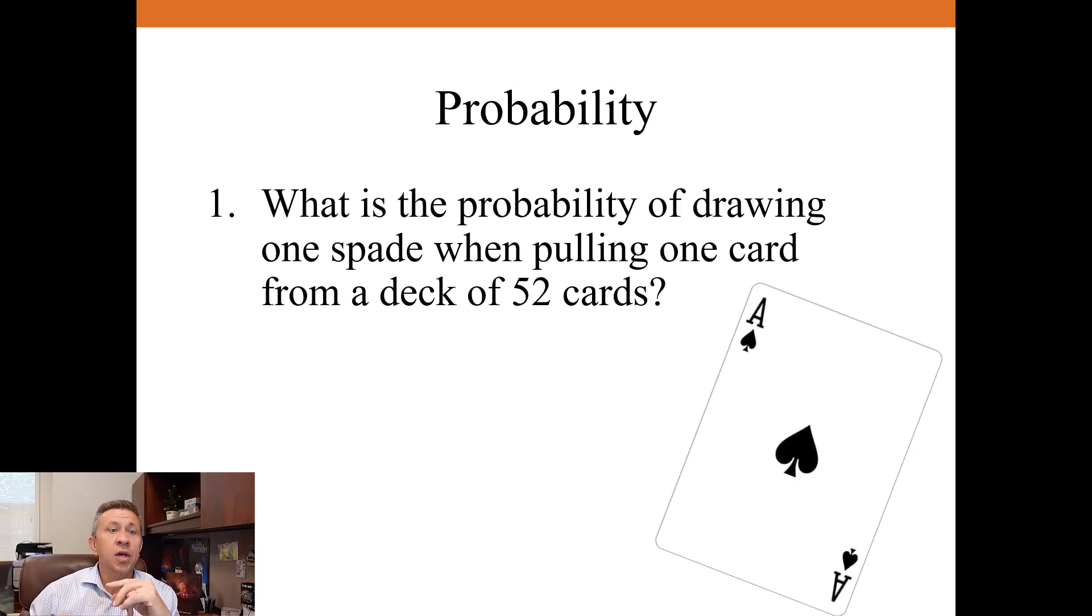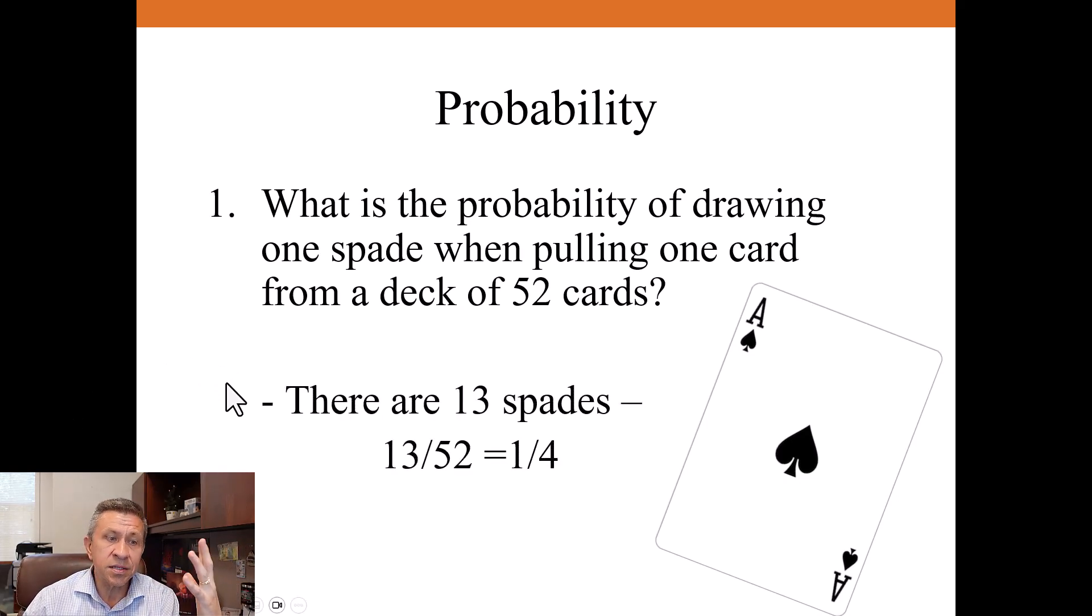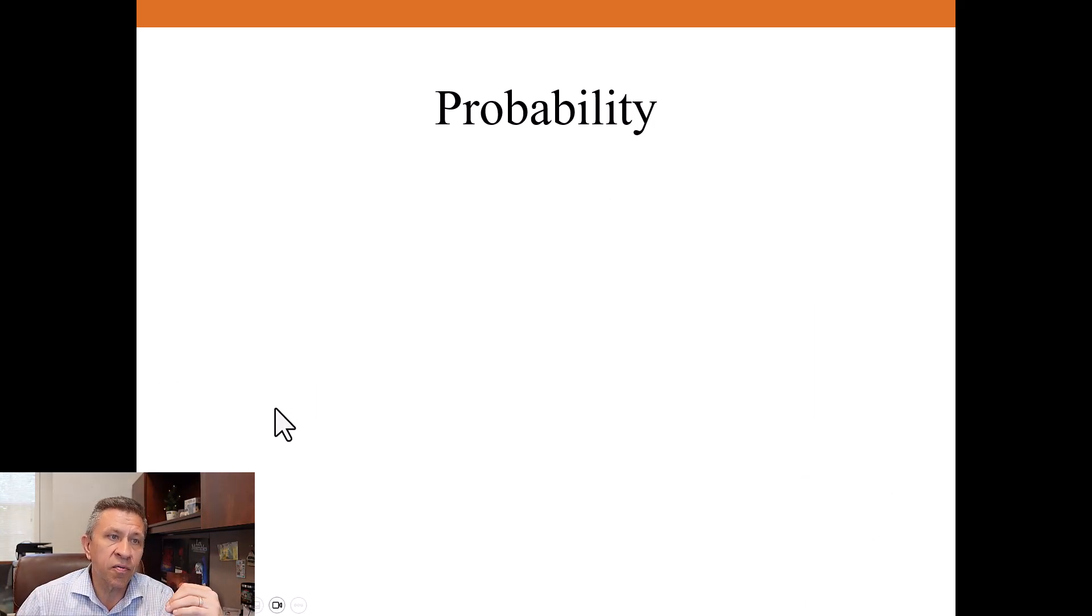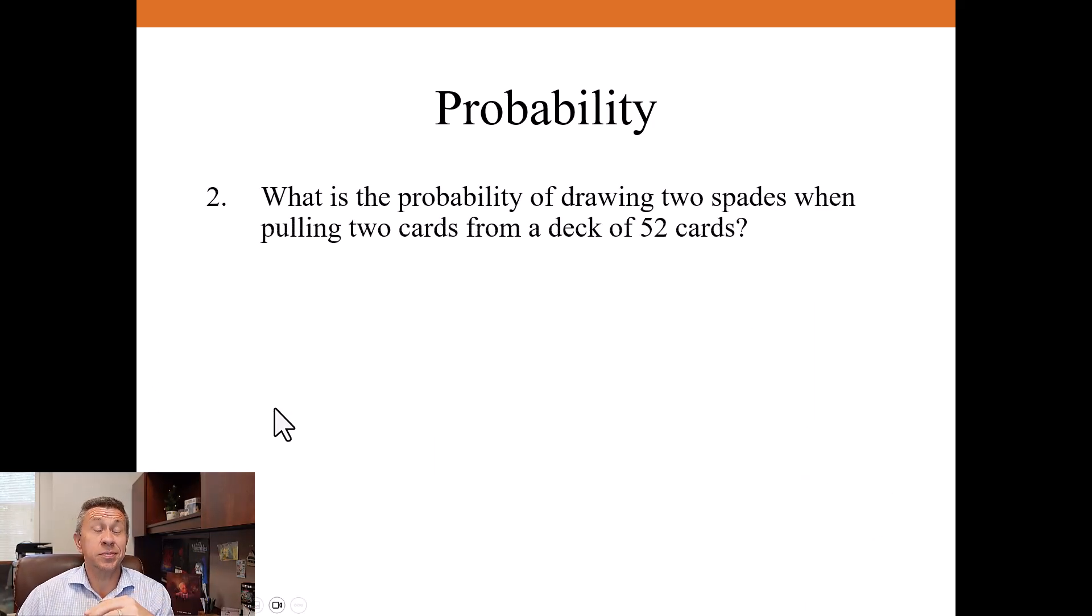So the first question, what's the probability of drawing one spade if you're pulling one card from a deck of 52 cards? We've got the ace of spades on the screen. Because there are 13 spades, 52 total cards, just take the 13, divide it by 52. So probability is 25% or one in four.